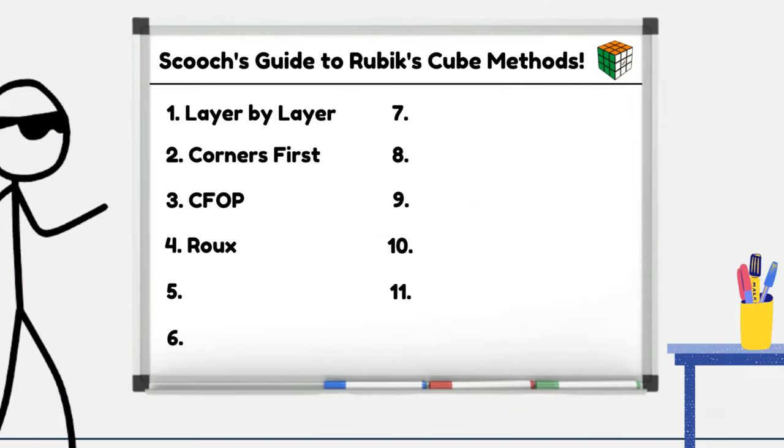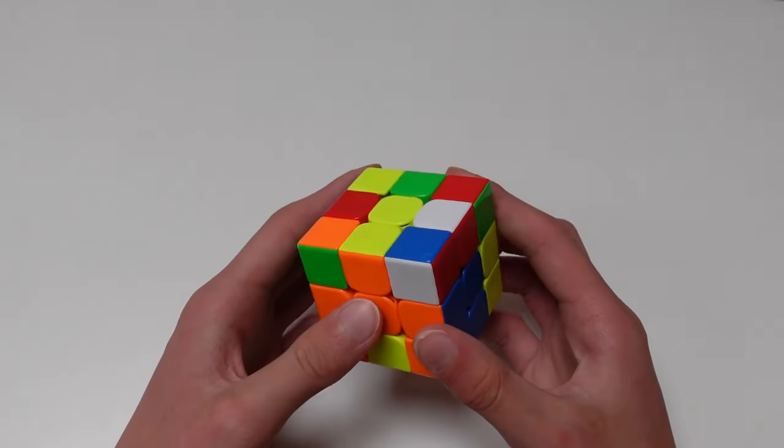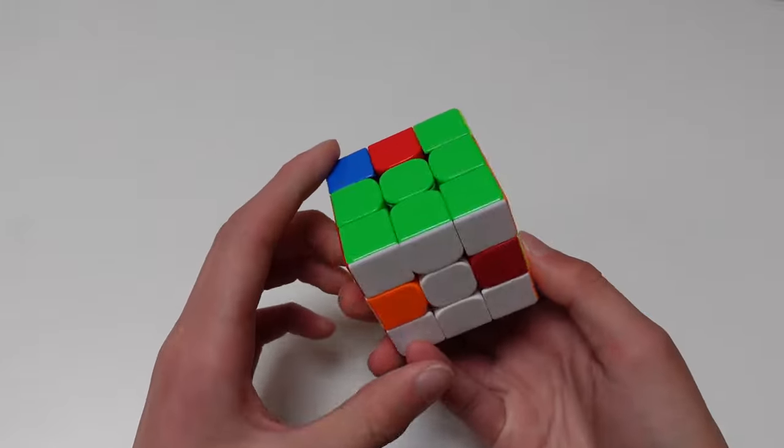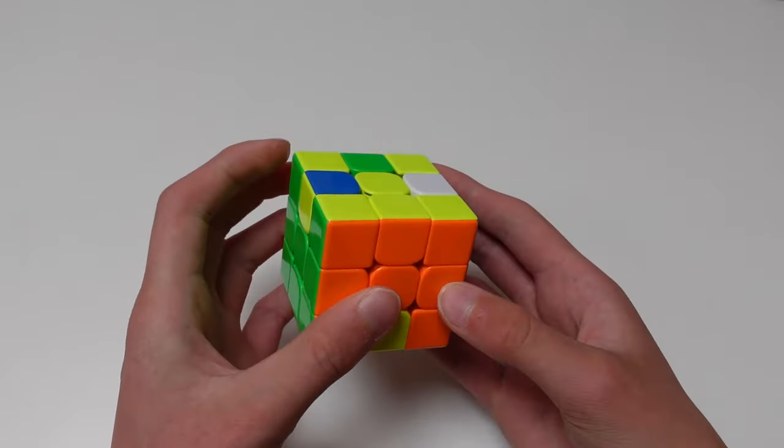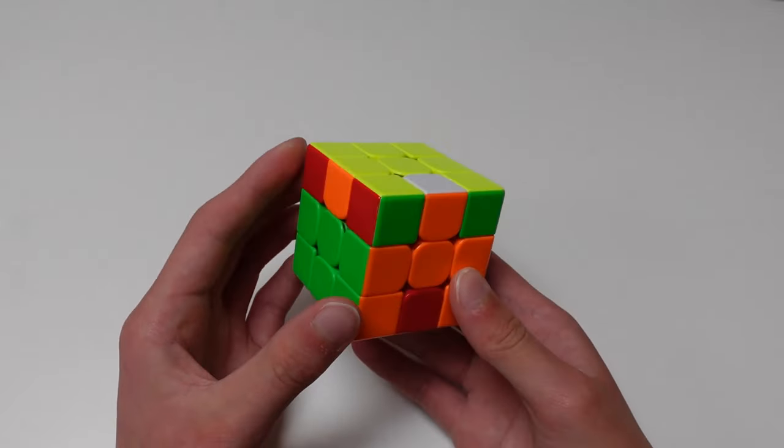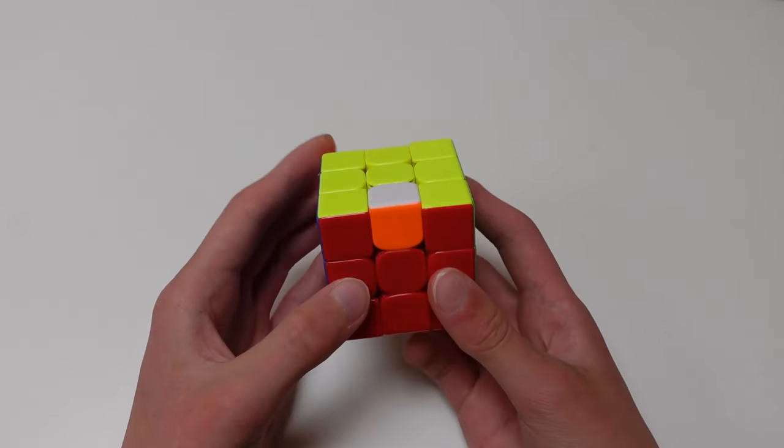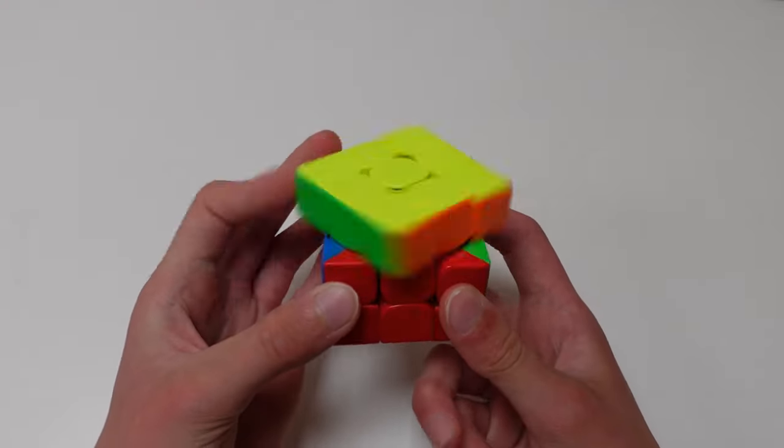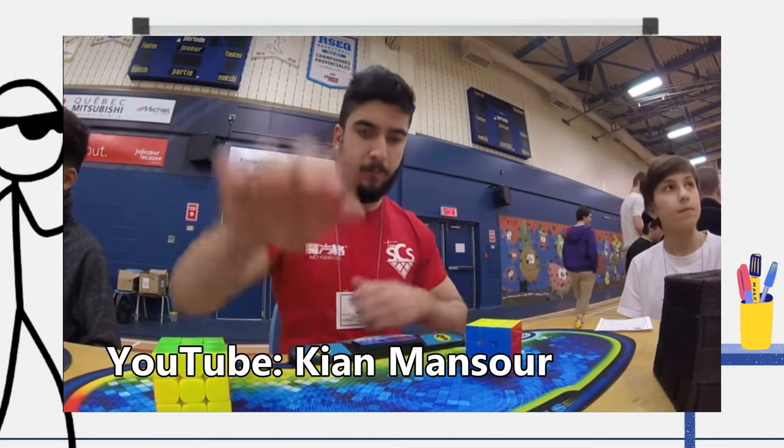Number 4, the Roux method. At the start of a Roux solve, you make a 1x2x3 block, and then another 1x2x3 block on the other side. Here, you solve the last four corners on the top layer. Then you orient the remaining edges using M and U moves. And finally, solve the edges using algorithms or intuition. Roux is a really good method, and with a lot of practice, it can be really fast. It is the second most popular method in top speed cubing behind CFOP.